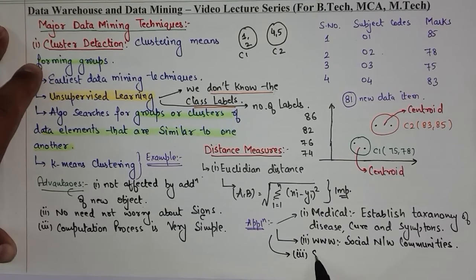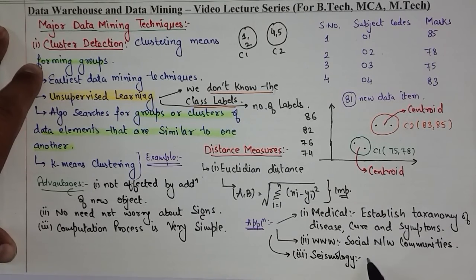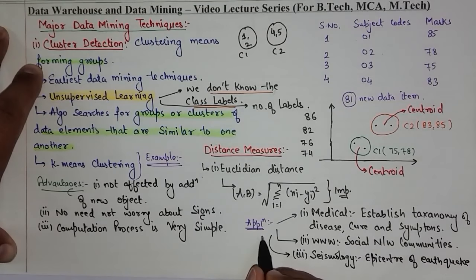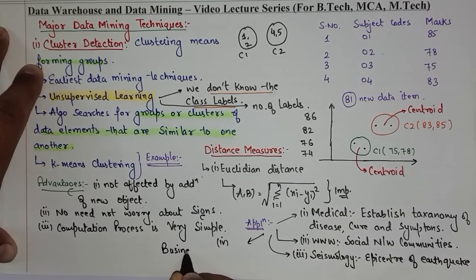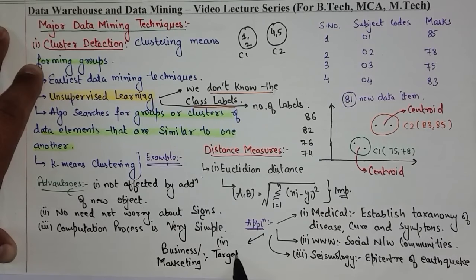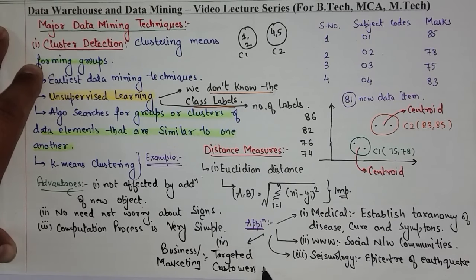The third application is in seismology, which is the study of earthquakes. Clustering is used for the determination of the epicenter of an earthquake. The fourth and most important application is in business marketing. All data mining techniques are most helpful in the business world. Clustering is used to find targeted customers — identifying customers to whom we can sell a particular type of product.